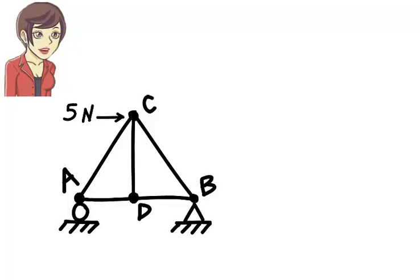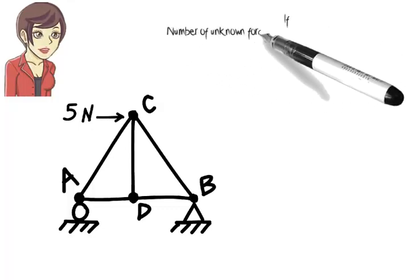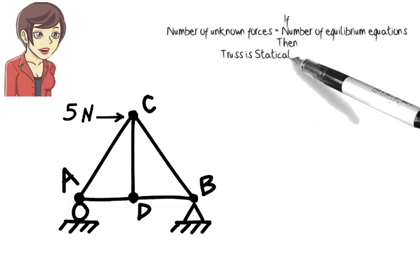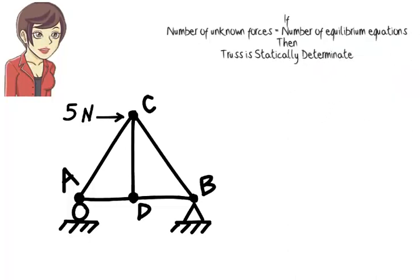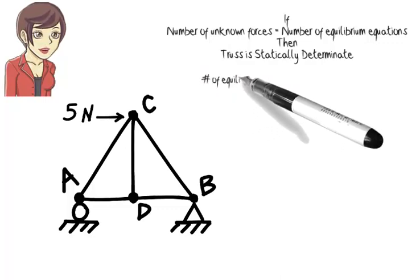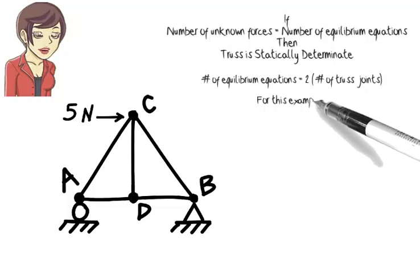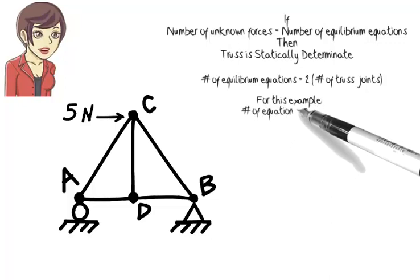A truss is said to be statically determinate if its member forces can be calculated solely using the equilibrium equations. Algebraically speaking, if the number of unknown forces equals the number of equilibrium equations, then the truss is statically determinate. The total number of equilibrium equations equals two times the number of joints in the structure. So if the truss has four joints, we can write eight equilibrium equations for it.